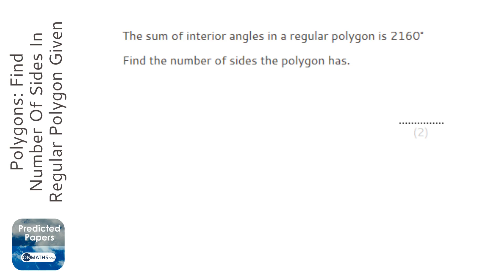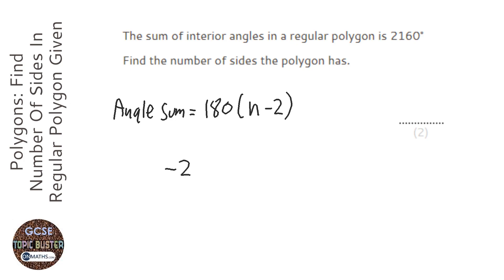Our formula for working out the angle sum is 180 times n minus 2. The first thing we're doing is taking away 2 and then we're multiplying by 180.